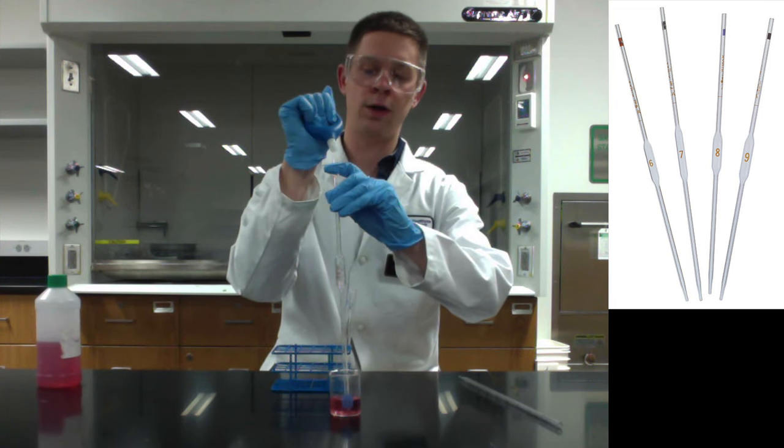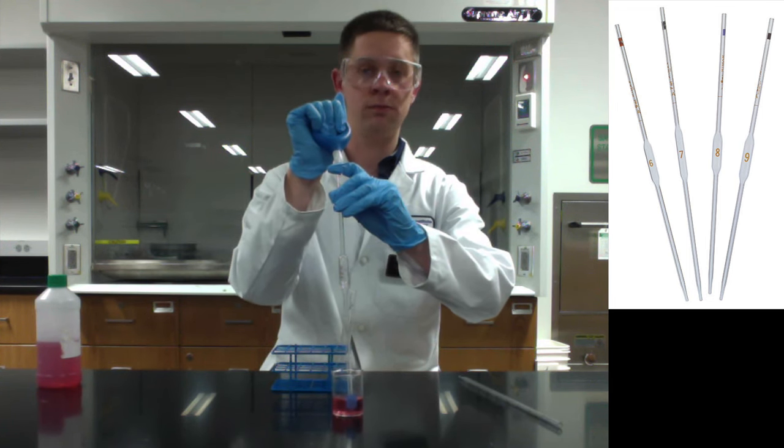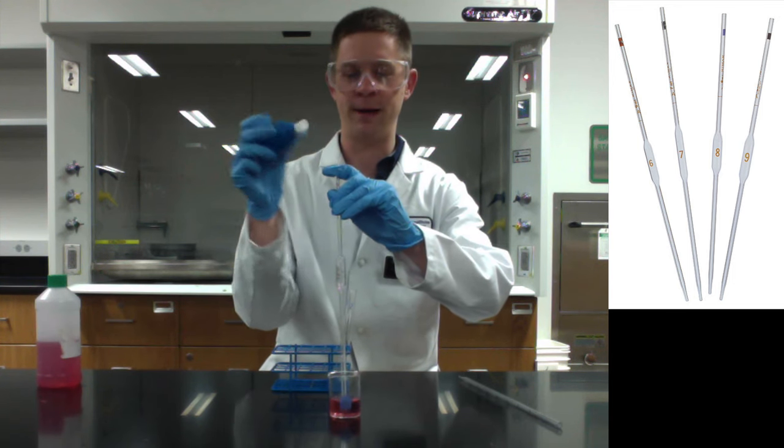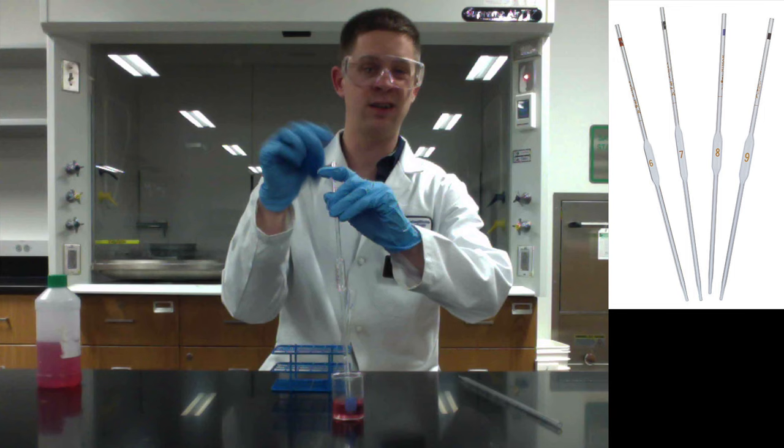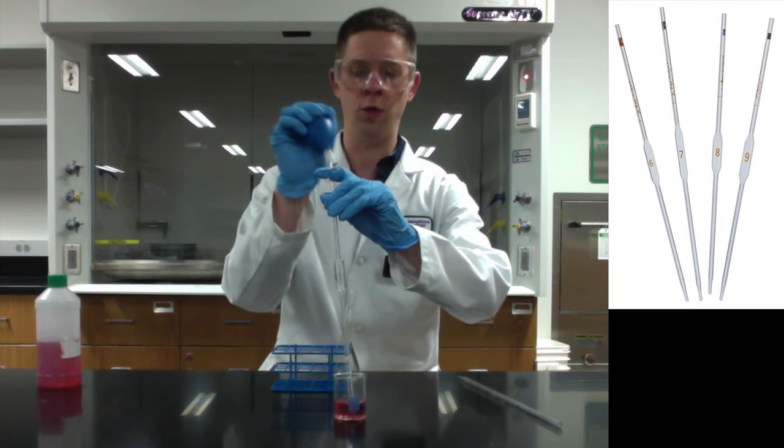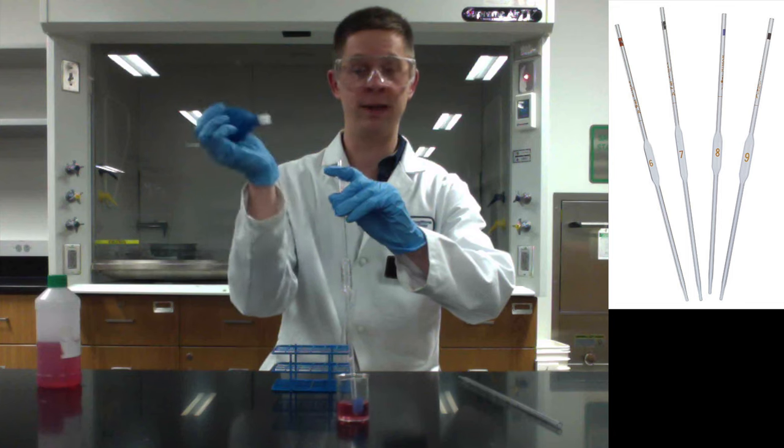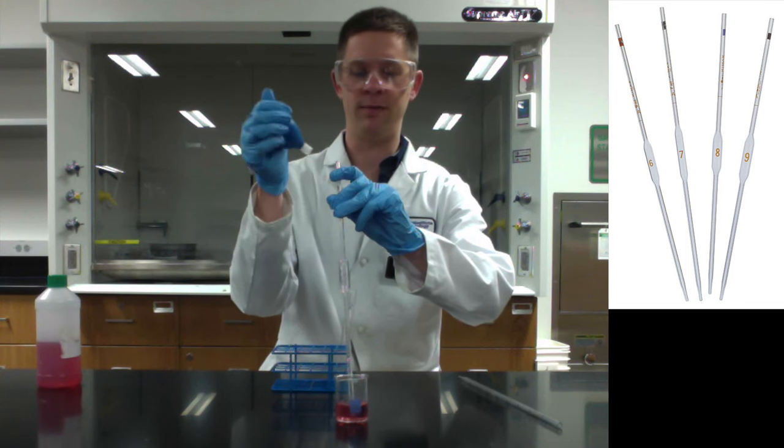Squeeze the bulb first before it goes onto the end of the pipette, and make sure, by the way, that you have a little plastic piece on the end of the pipette bulb. Otherwise, it'll get stuck on the end, and that's not actually what you want. You want the ability to put on, to seal, and remove this, to break the seal at the top of the pipette very quickly.